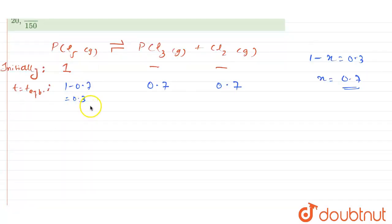Moving forward, it is said that 0.3 moles of PCl5 is there at equilibrium, so we calculated that the x value is 0.7. Now concentration of PCl3 we need to find, and this is equal to n upon v.